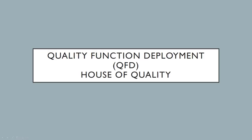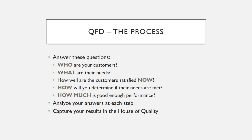This video gives a walkthrough of the quality function deployment process as applied to a relatively simple design of a water filter. Specifically, we'll look at how to fill out the house of quality table based on data you've already collected. The QFD process focuses on helping you answer: who are your customers, what are their needs, how well are they currently satisfied, how will you determine if their needs are met, and how much is good enough performance on each of those criteria. You analyze your answers at each step and capture all results in the house of quality.